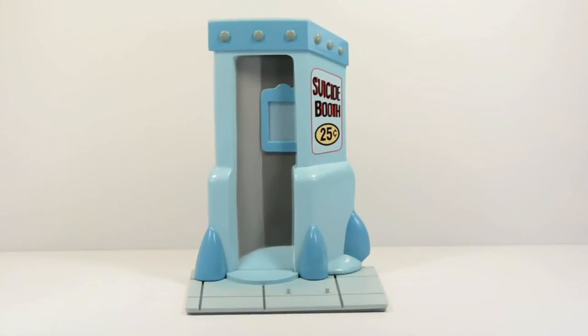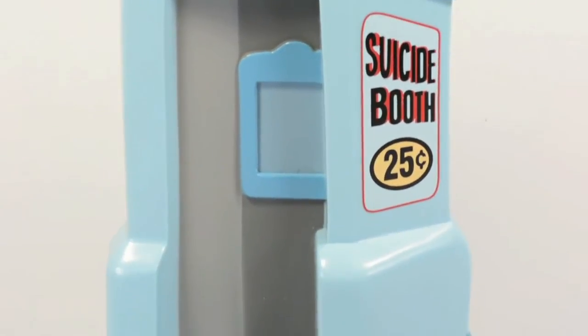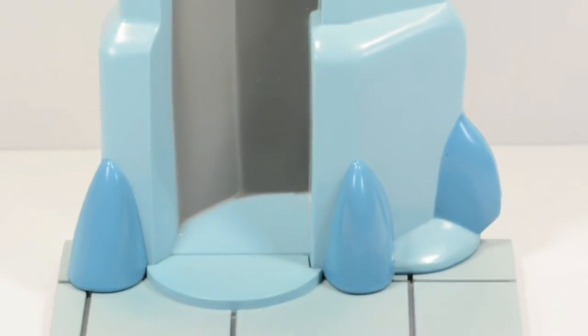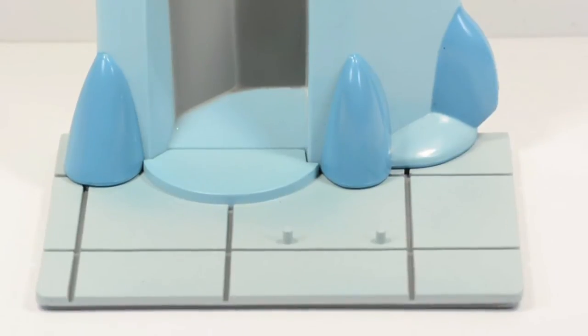So Bender's biggest accessory is the figure stand slash suicide booth. And a quick look at the detail, it says suicide booth, it's only 25 cents, which is a pretty good deal. And you can see that the peg holes are sculpted in on the bottom right there.